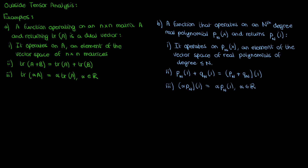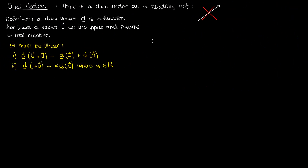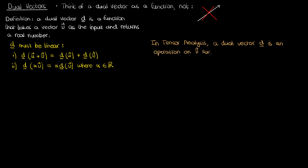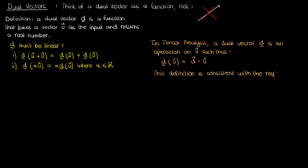So now we've seen some abstract examples of dual vectors, or 1-forms, or co-vectors. Let's return to tensor analysis to describe the exact kind of function a dual vector represents in that context. In tensor analysis, a dual vector d is an operation on the contravariant vector v that returns the inner product of v and the vector d corresponding to the dual vector d. This is consistent with what we want: it takes a contravariant vector, spits out the dot product as a real number, and is linear because the dot product is a linear operator.